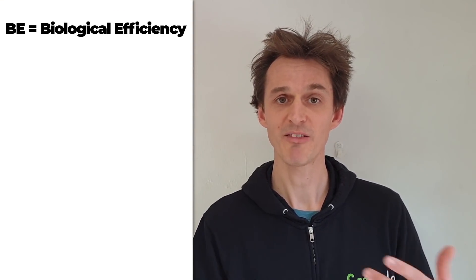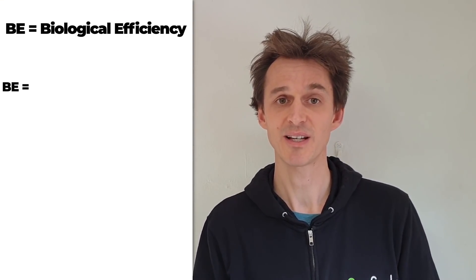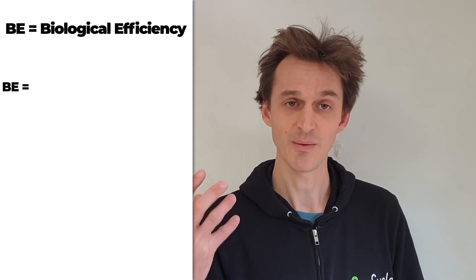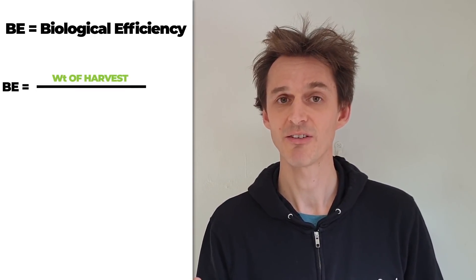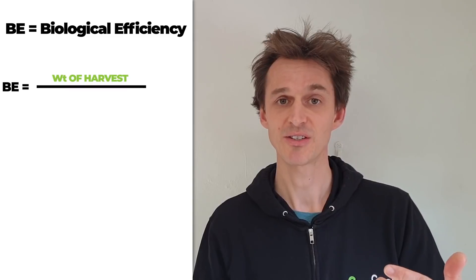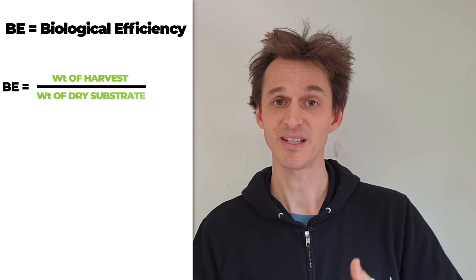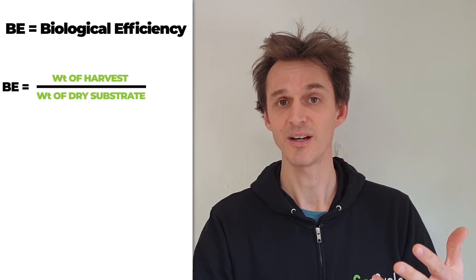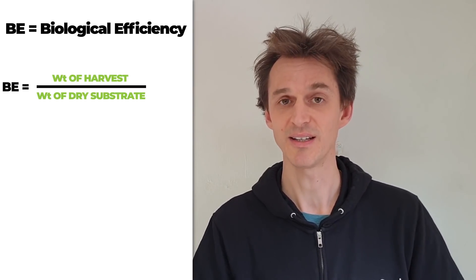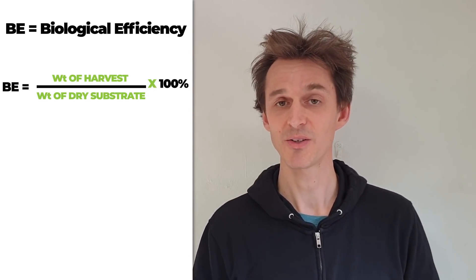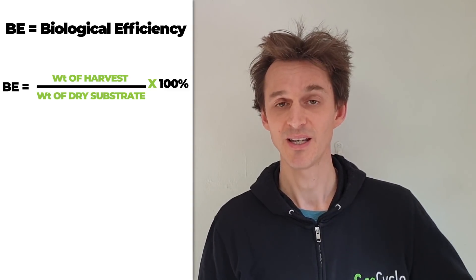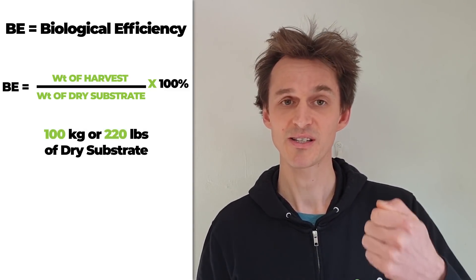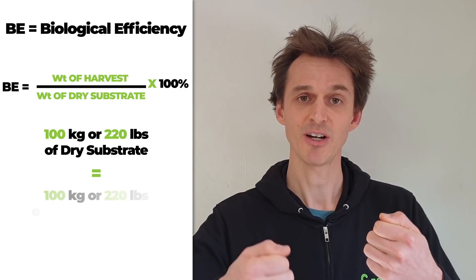Biological efficiency is one way of measuring yield — it's basically a comparison of the wet weight of mushrooms you receive from the substrate in relation to the dry biomass in the substrate: the straw, sawdust, or soybean hulls before they get hydrated. A 100 percent biological efficiency would mean you put in 100 kilograms of dry substrate material and receive 100 kilograms of fresh mushrooms at the end.